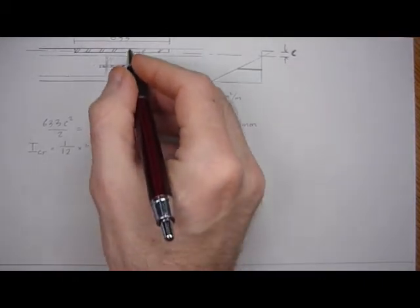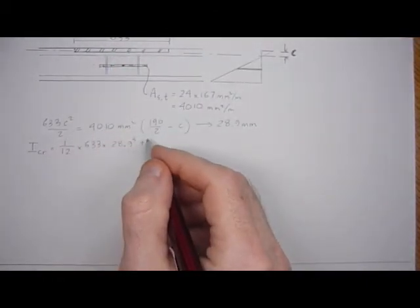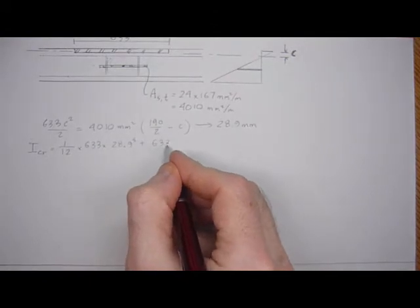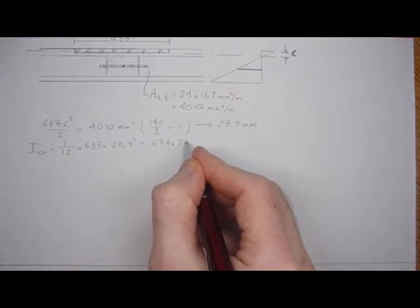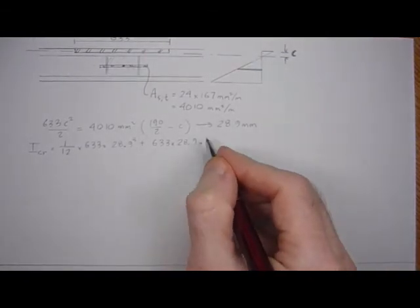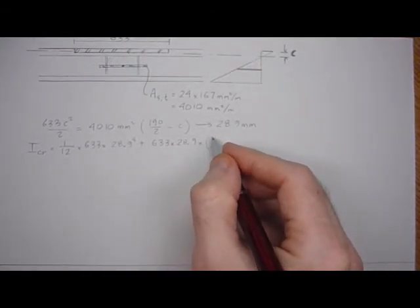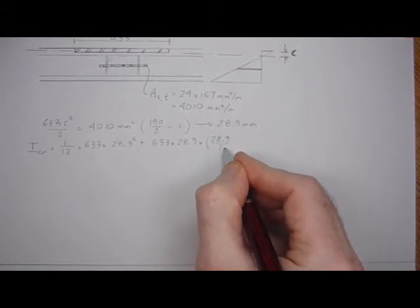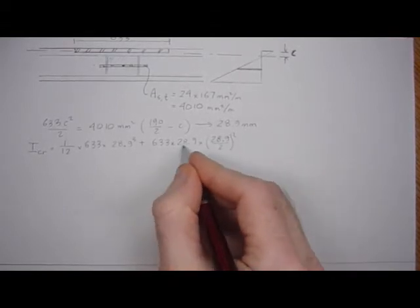Plus the area of that effective masonry, which is 633 times 28.9 over 2 squared AD squared.